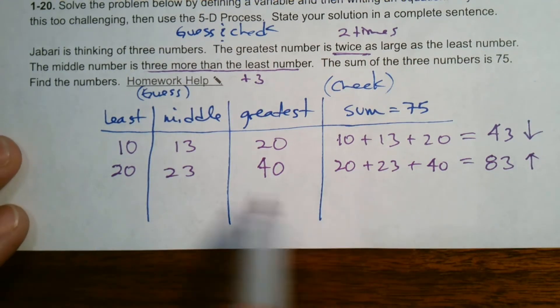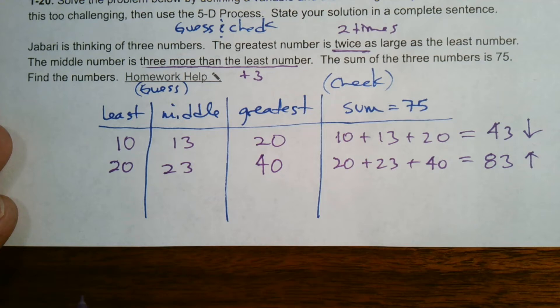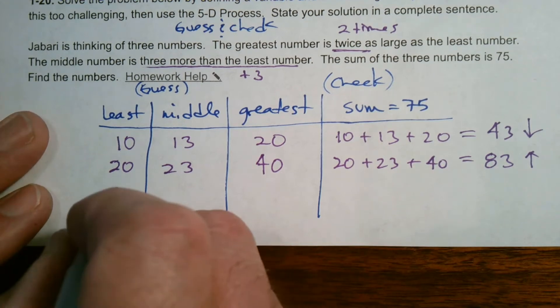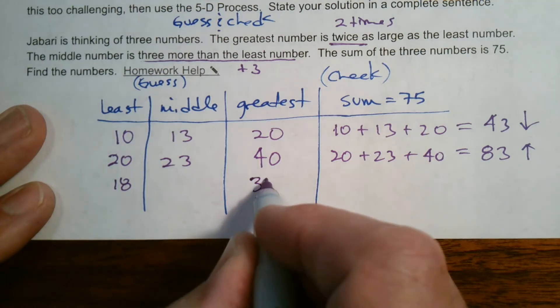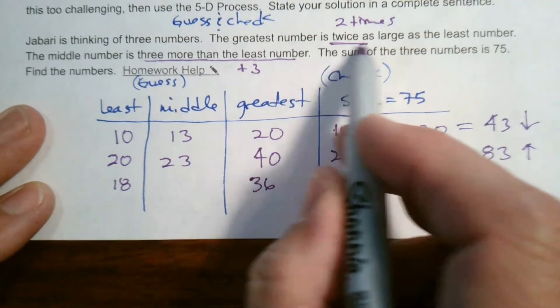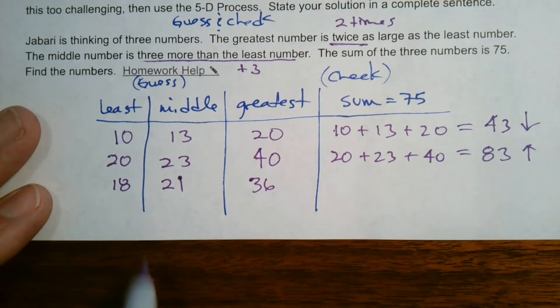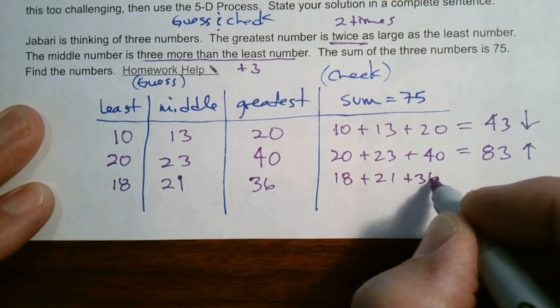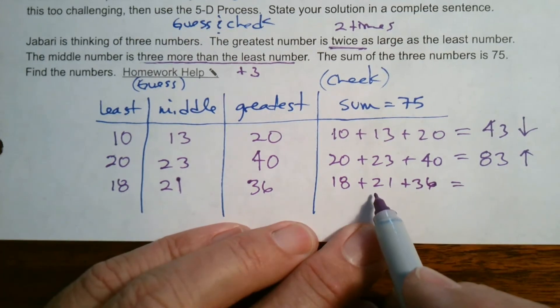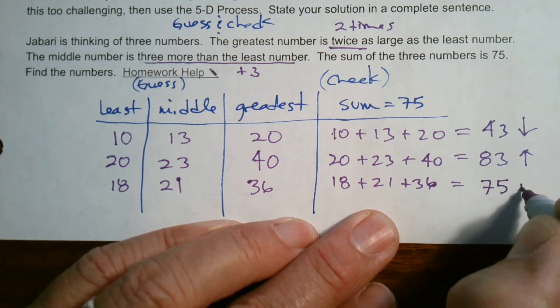I know it's somewhere between 10 and 20. Let me try 18. Twice of 18 is 36 for the greatest. Three more than the least is 21 for the middle. Adding them up: 18 plus 21 plus 36 equals 75. Bingo, there it is!